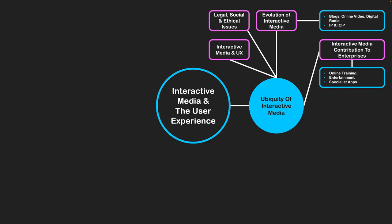Specialist apps allow us to do things we couldn't do before, or make existing tasks more efficient — such as delivery tracking when ordering online. Apps like Uber and Uber Eats let us order services, connecting us with drivers or stores to deliver food without us moving. Other specialist apps help within industries, using augmented reality overlays via cameras and tablets to enhance how we do our work.